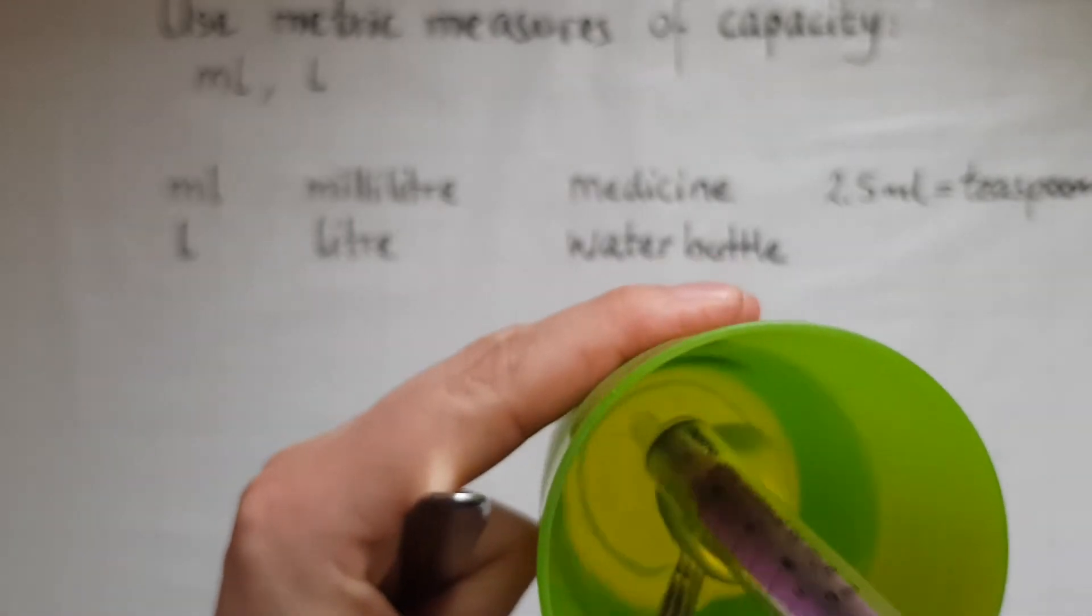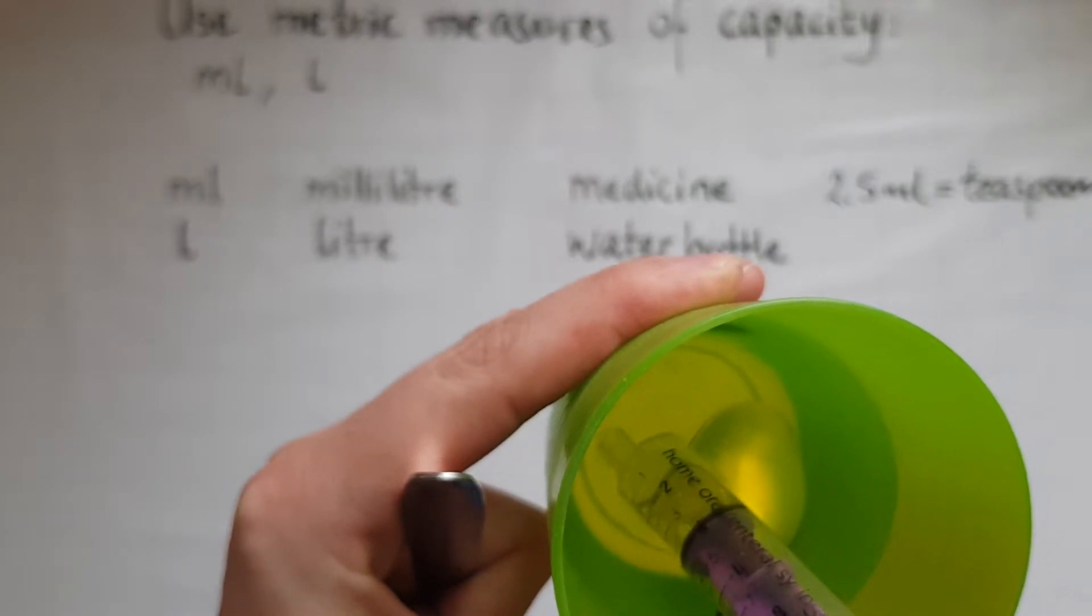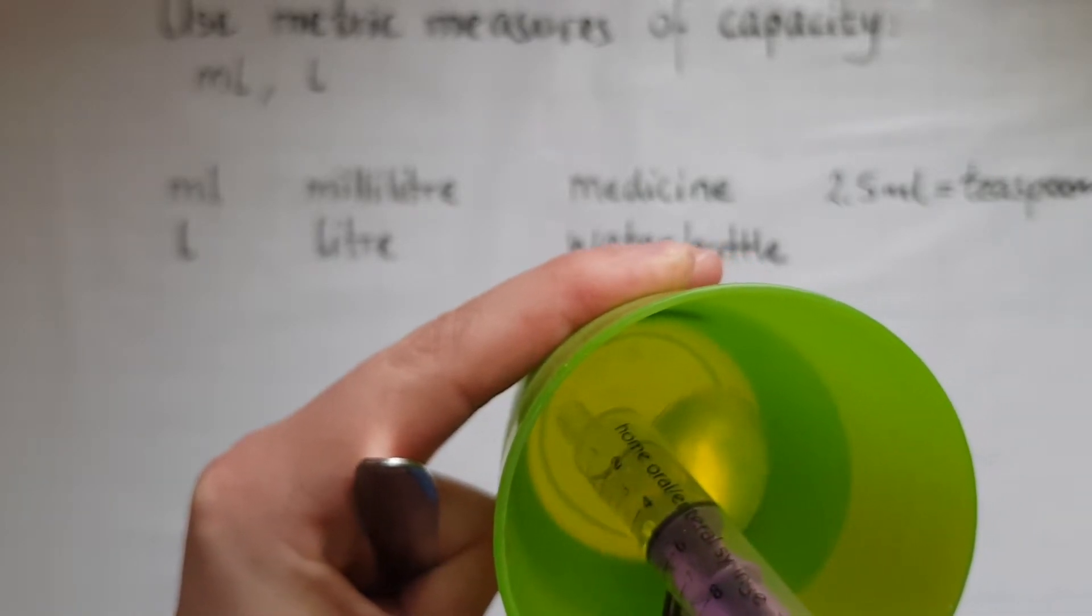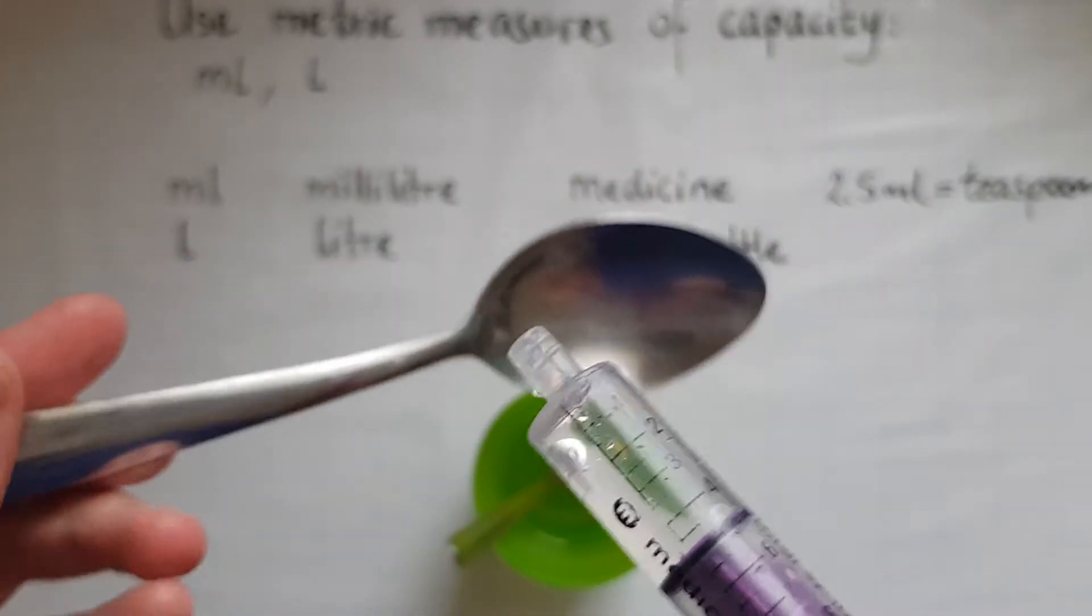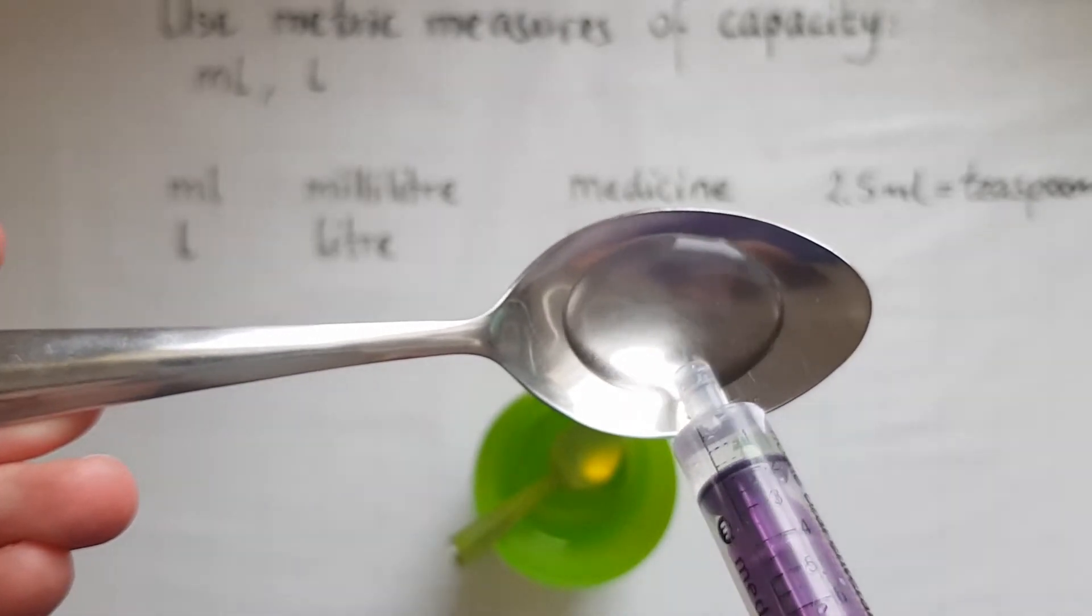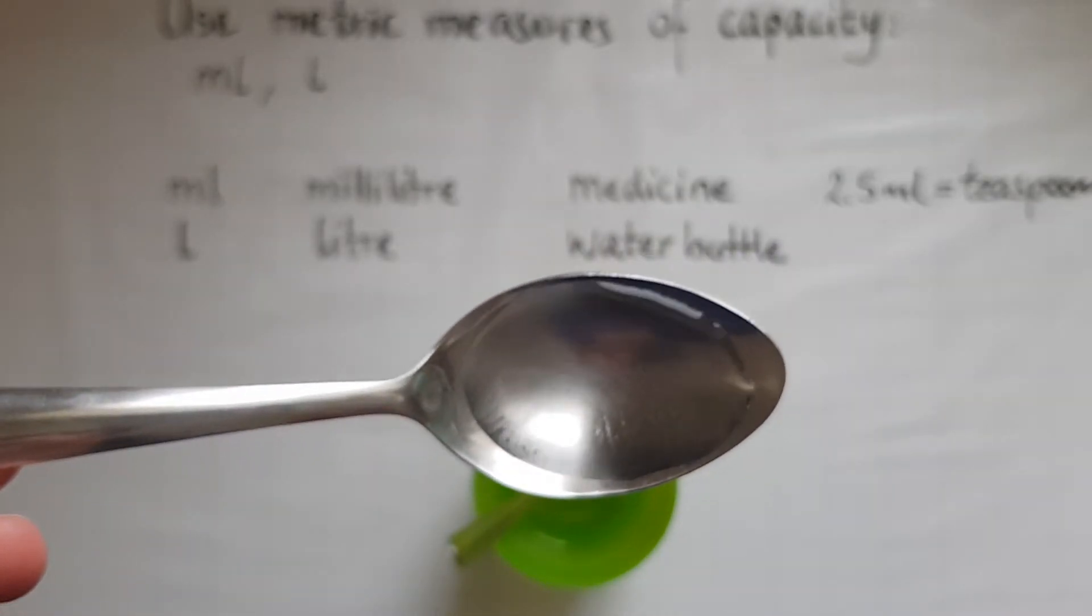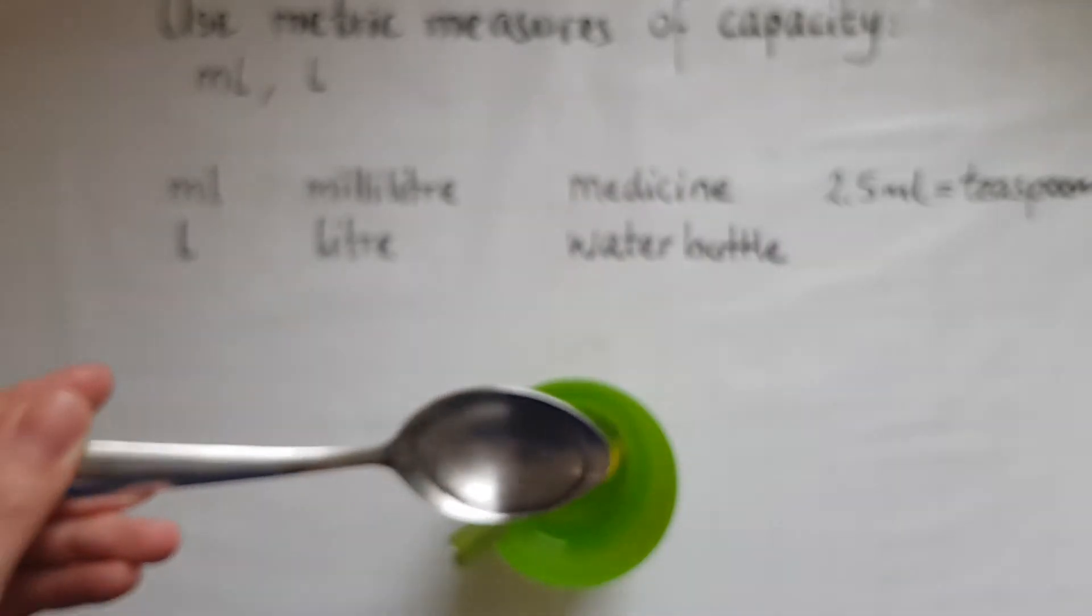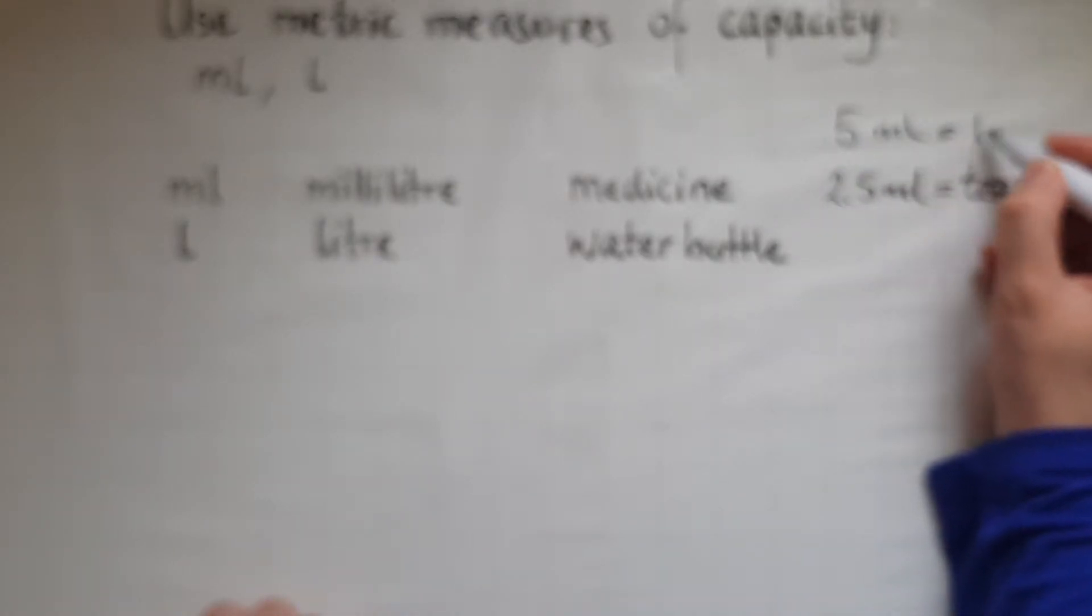I will fill this with five milliliters. So I've got five milliliters in the syringe and I'll empty that. It's roughly about five milliliters. So I'll add that as well. So five milliliters makes a tablespoon.